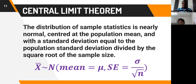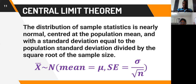We continue with our lesson on the concepts and applications of statistical inference. In our previous lecture, we looked at the various parts of the central limit theorem and practiced it in R. We found that the distribution of sample statistics — the sampling distribution — is nearly normal, centered at the population mean with a standard deviation equal to the population standard deviation divided by the square root of the sample size.